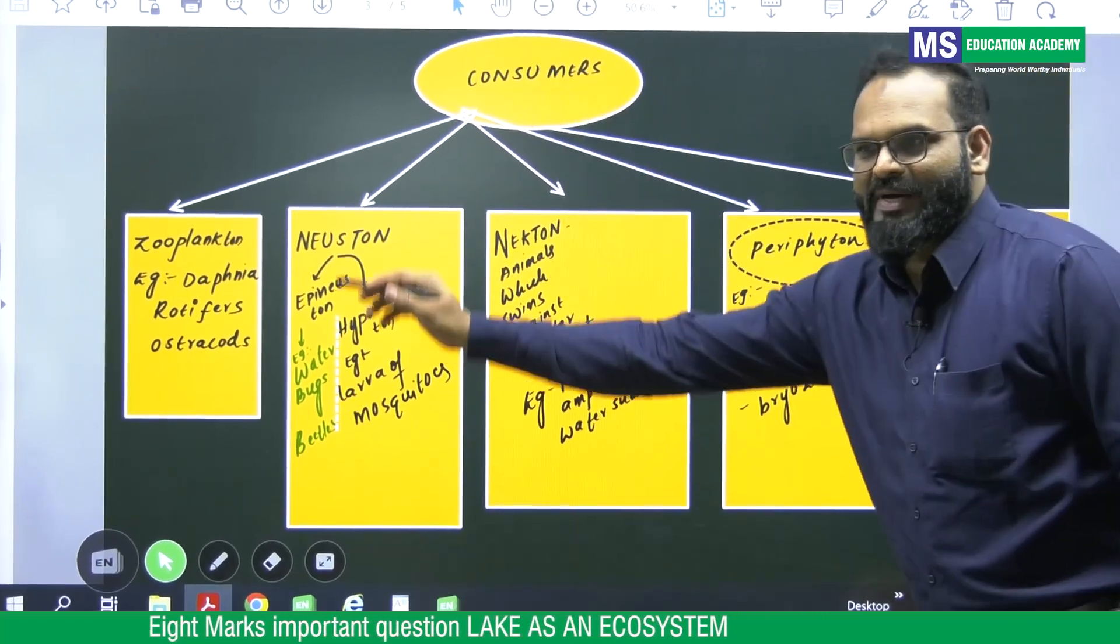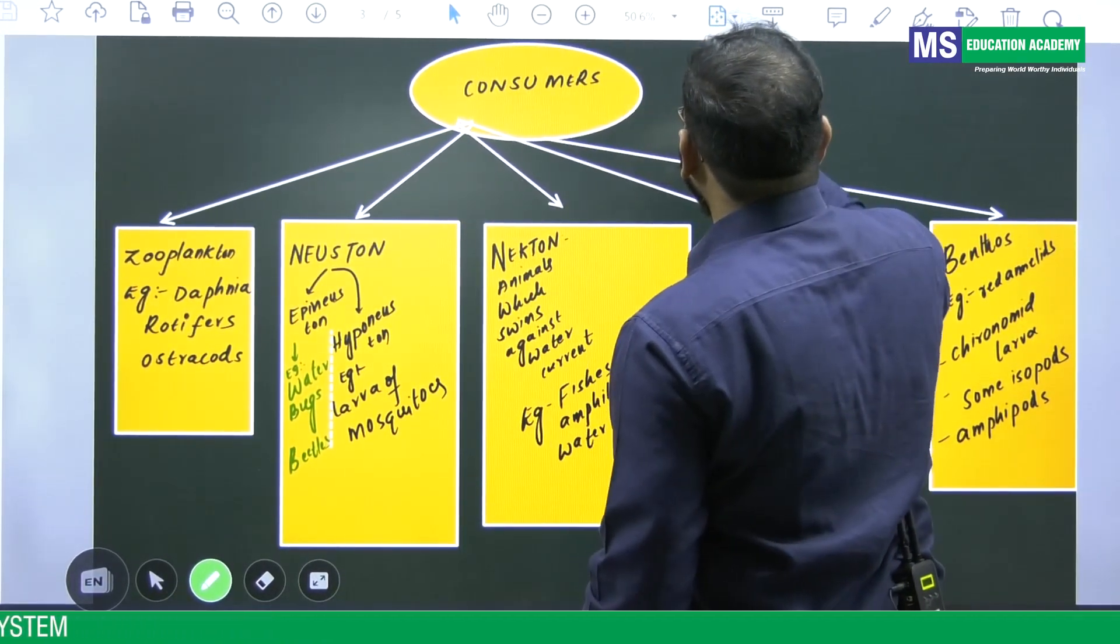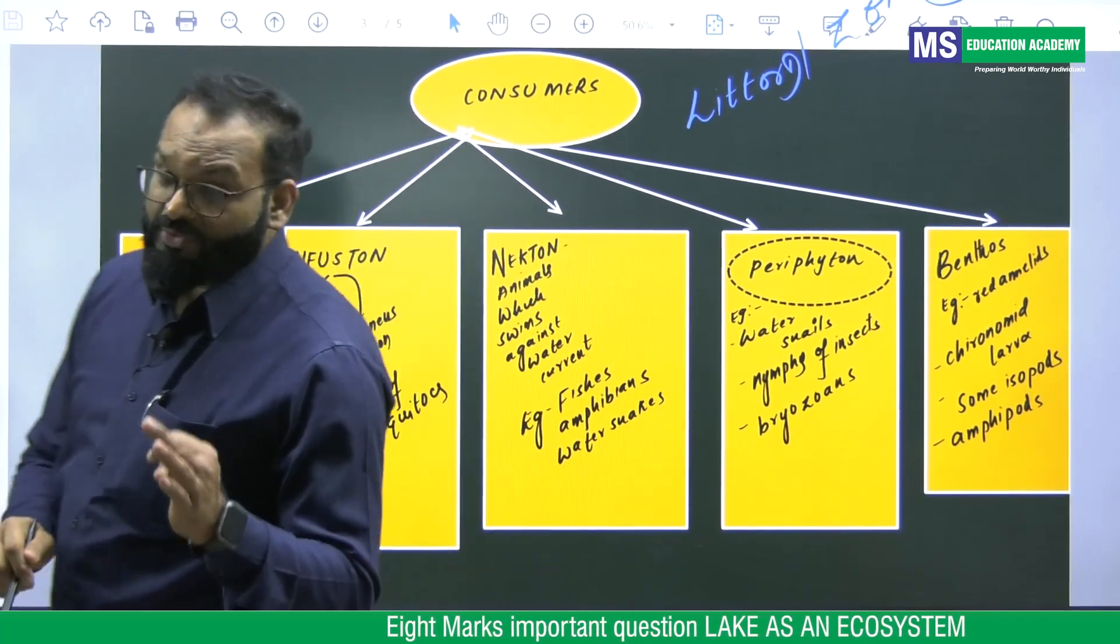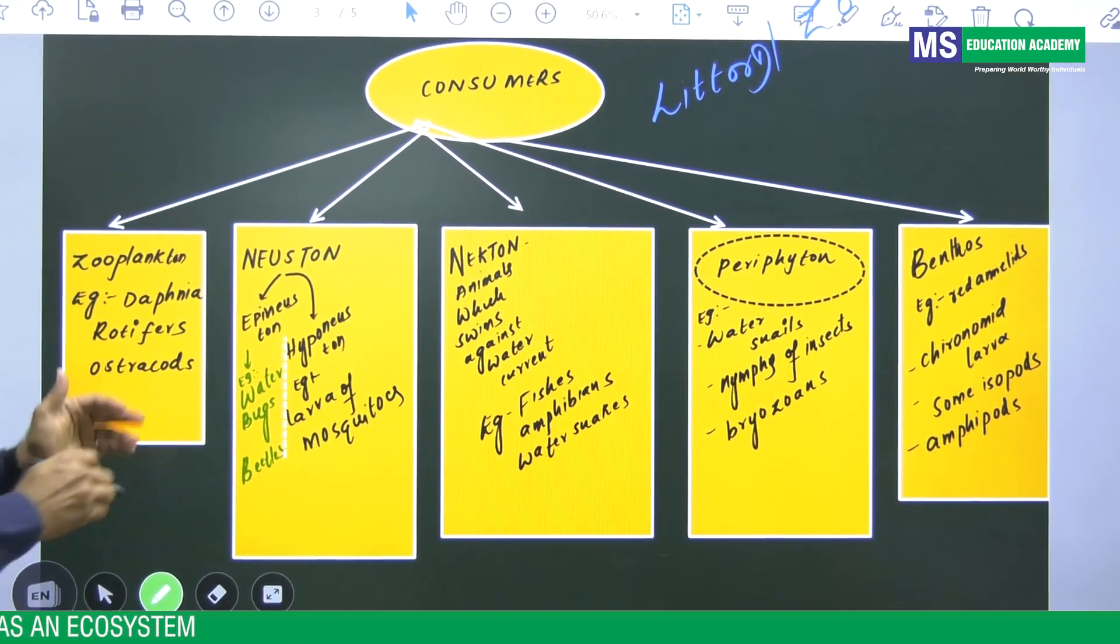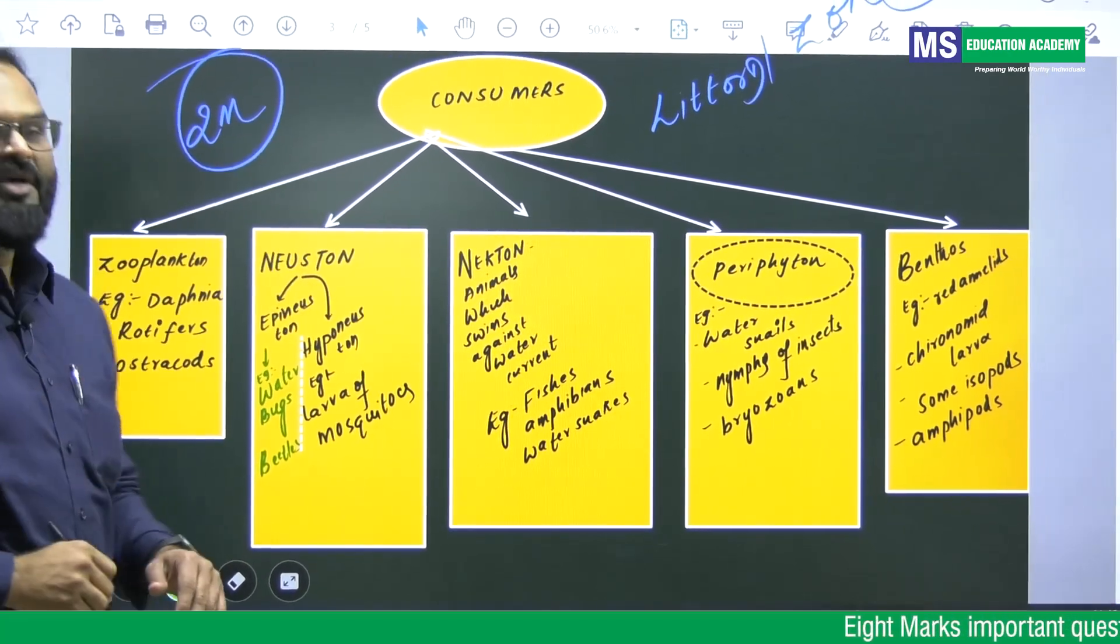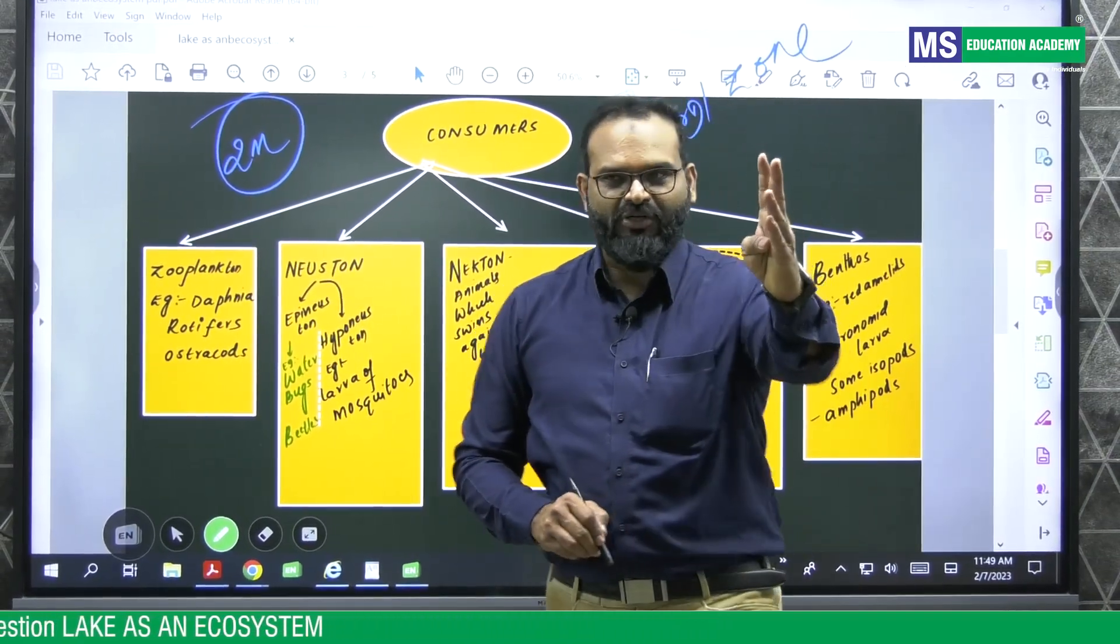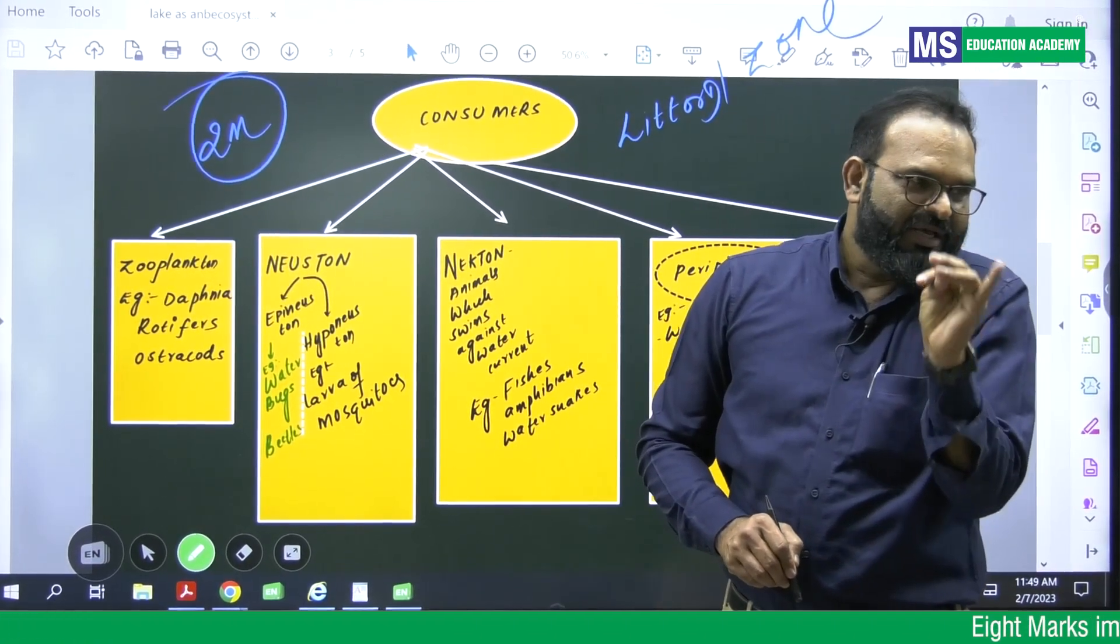Now coming to consumers, students. Consumers present in littoral zone, they are classified into five types. Zooplankton, Neuston, Necton, Periphyton, Benthos. I was saying about two marks questions. So these can be even asked for two marks, VSAQs students. I repeat one more time. Consumers in littoral zone are Zooplankton, Neuston, Necton, Periphyton, Benthos.